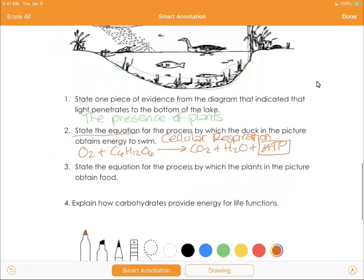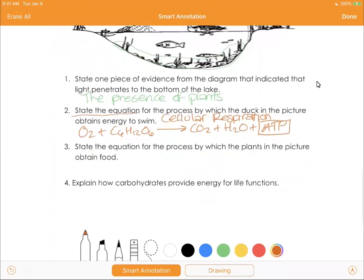State the equation for the process by which the plants in the picture obtain food - so the glucose that they obtain. We should know that is the process of photosynthesis. And we know that these are opposite processes. So they take in CO2 and water, and of course sunlight, and they yield glucose and oxygen.